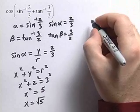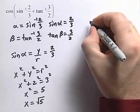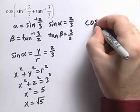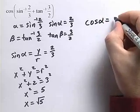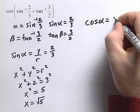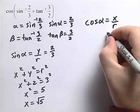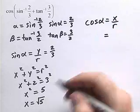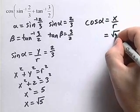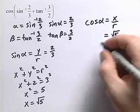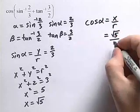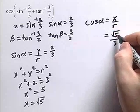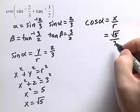Now we'd like to find the cosine of alpha, as we'll need that later. The cosine of alpha is equal to x over r. In this case, x is the square root of 5 and the radius r is 3, so cosine of alpha is equal to the square root of 5 over 3.